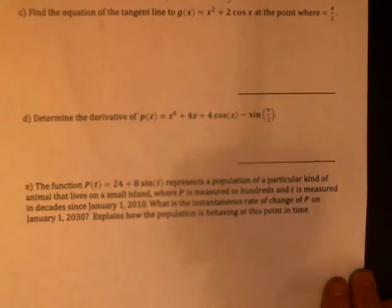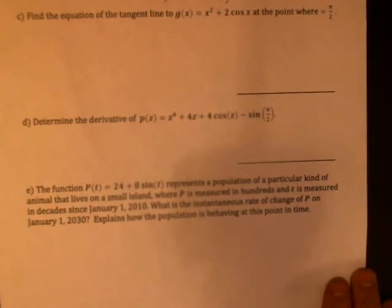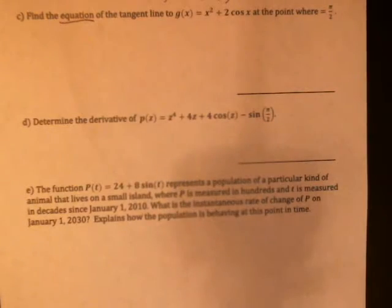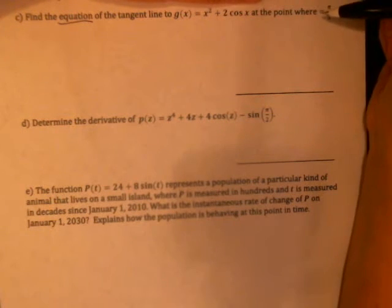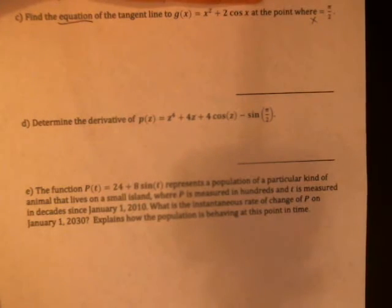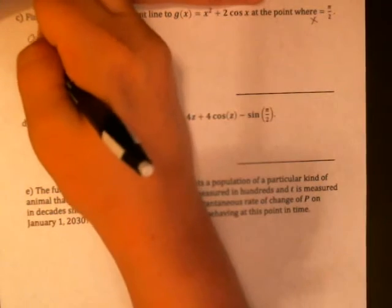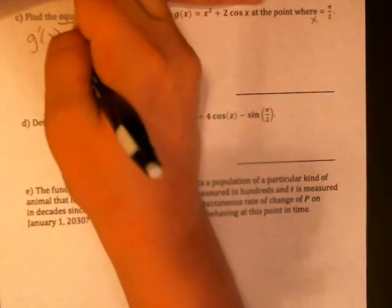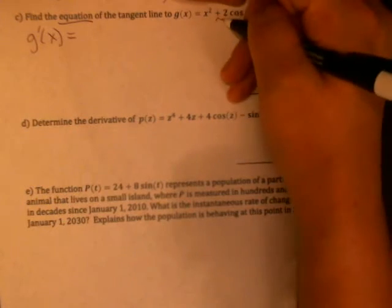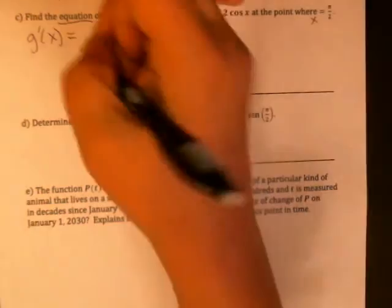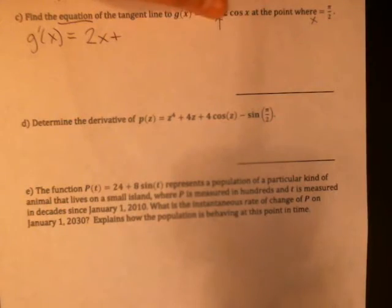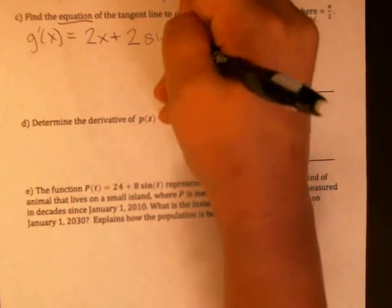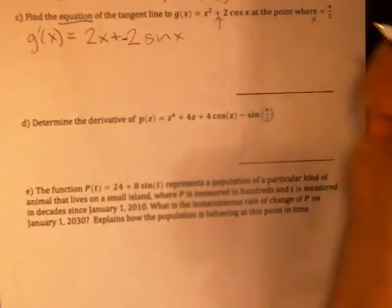Okay, part c asks us to go a step further and actually find the equation for the tangent line to g(x) equals x squared plus 2 cosine x. At the point where that should have an x in it, x equals pi over 2. So similar first step, we need to find the derivative. The derivative, this is a sum. So we'll first look at the x squared. The derivative of x squared is 2x. And then the plus will carry through. The 2 is a constant multiple. The derivative of cosine x is minus sine x. So that's actually going to become a minus 2 sine x.